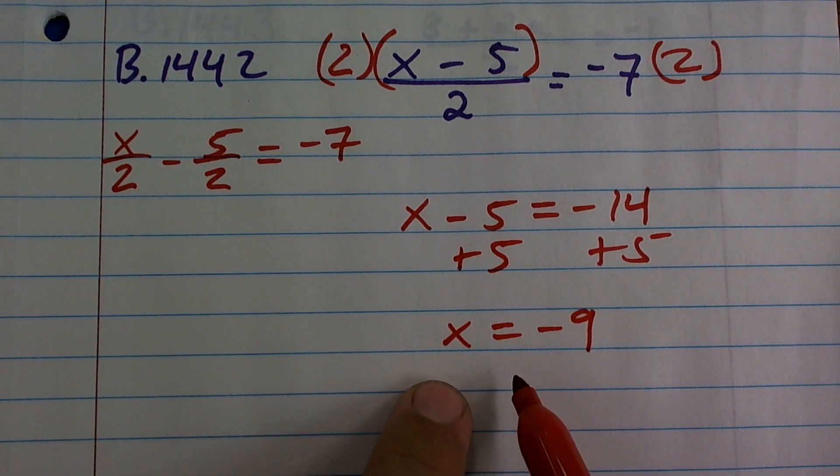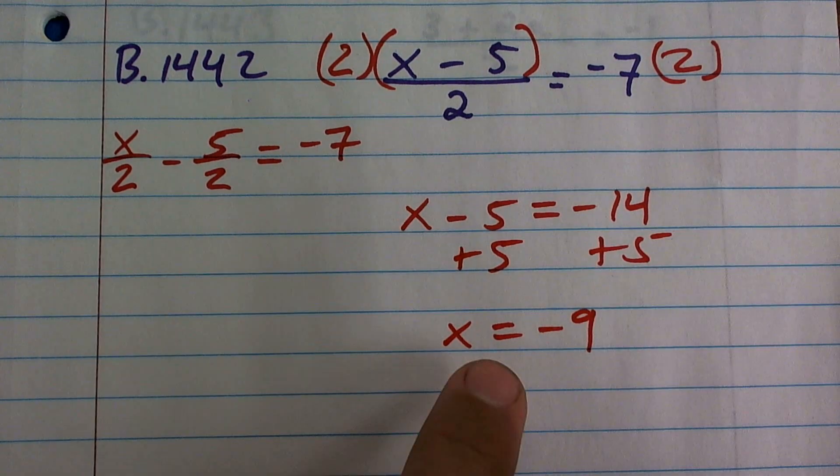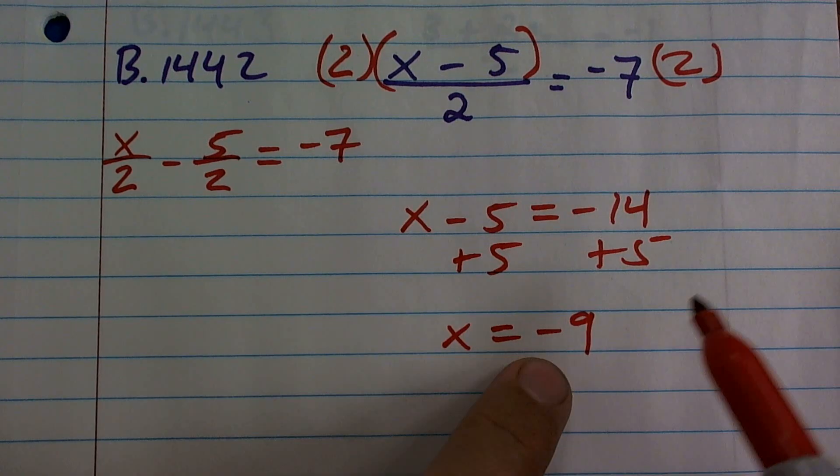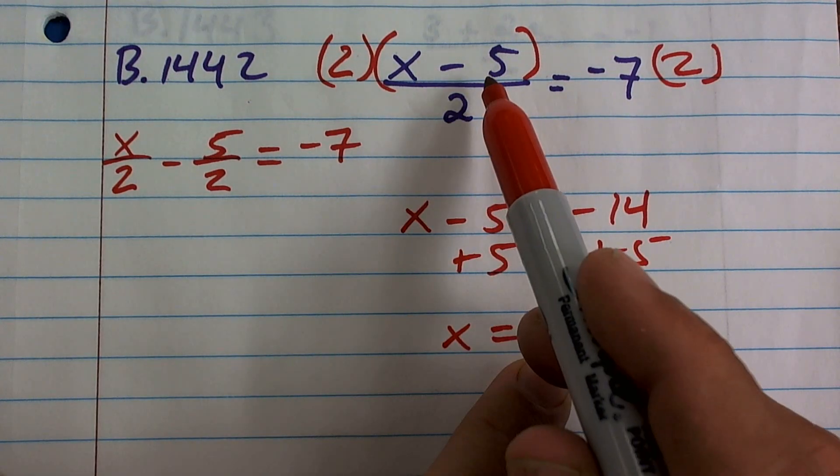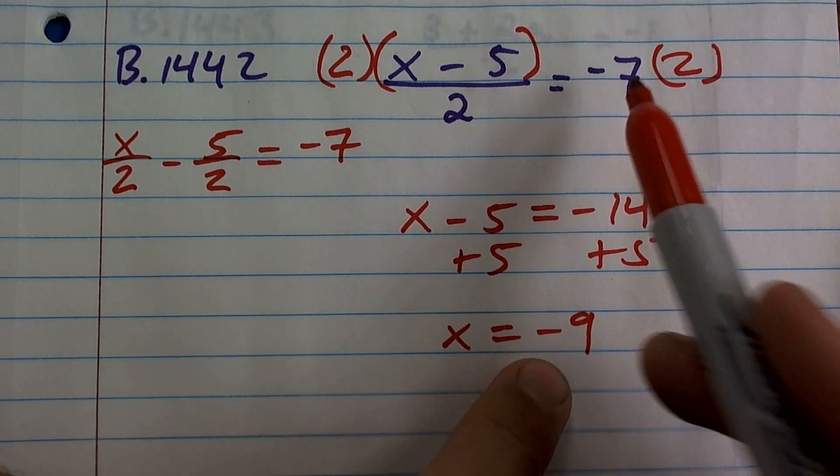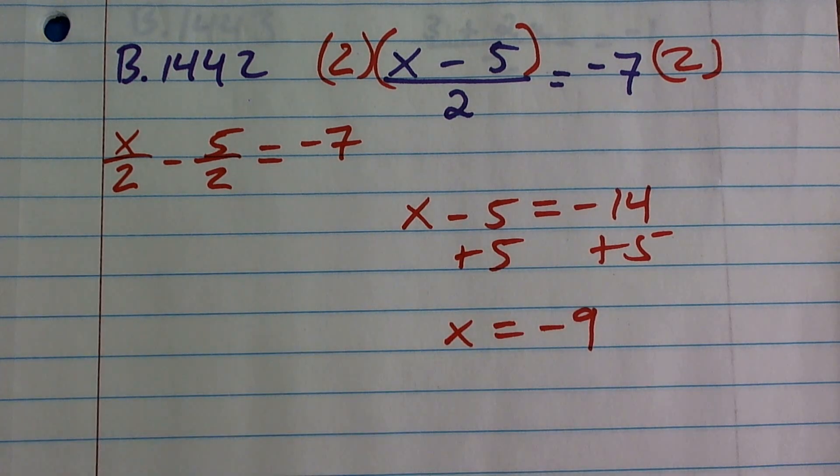That means the value of my variable that makes the solution true is negative nine. Let's check our answer. Negative nine minus five is negative 14. Negative 14 divided by two is negative seven. So there you go. We're good.